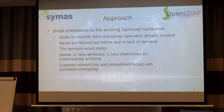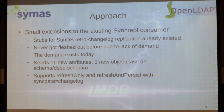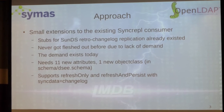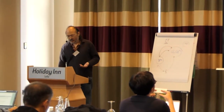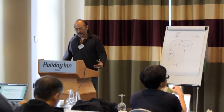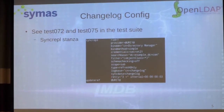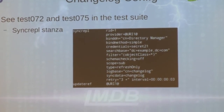It turns out supporting it is really not that big a deal. We added a total of 11 new attributes to correspond to the changelog schema. You configure it like delta syncrepl — it still supports refresh-only and refresh-and-persist. The difference is instead of saying sync-data equals accesslog, you say sync-data equals changelog. There are two test scripts in the test suite, and this particular test suite will actually spin up a DSCE server if you have it in your path. The configuration looks pretty much the same as a delta syncrepl config — the only difference is at the bottom where you specify changelog.